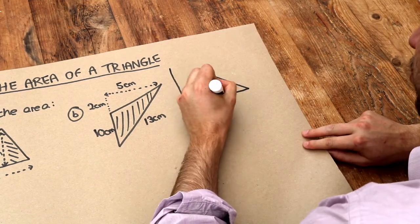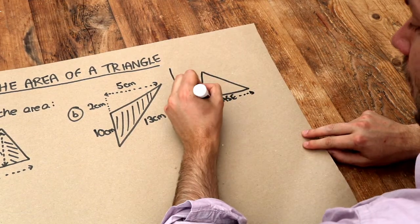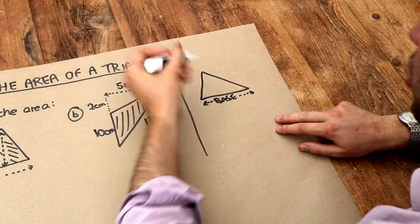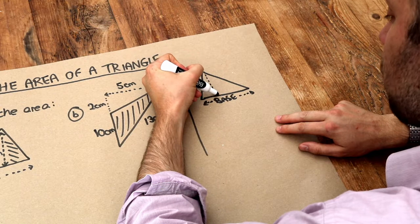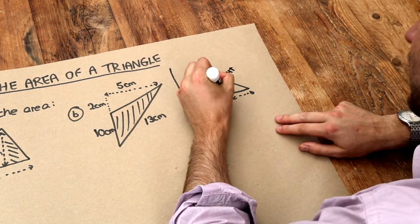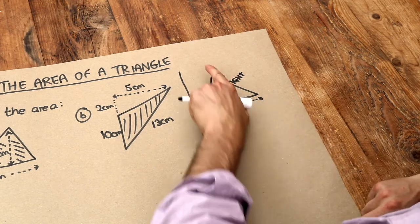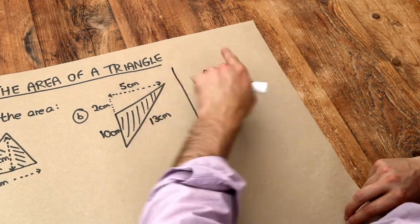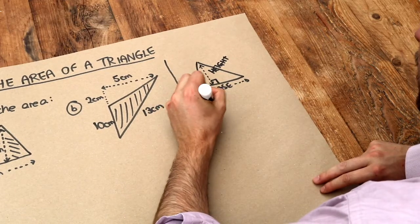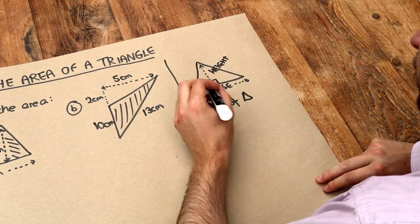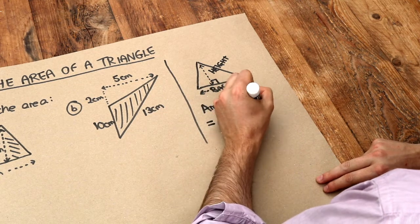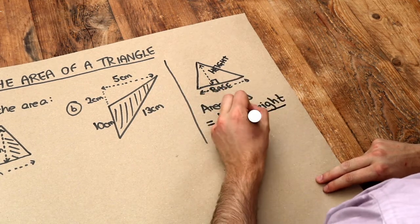If you have the base of the triangle — and that might be the horizontal side, but it might not be — and you have the height of the triangle, that height has to be perpendicular to the base, so at a right angle to the base. If one is horizontal the other would have to be vertical. Then the area of the triangle is equal to the base times the perpendicular height divided by two.